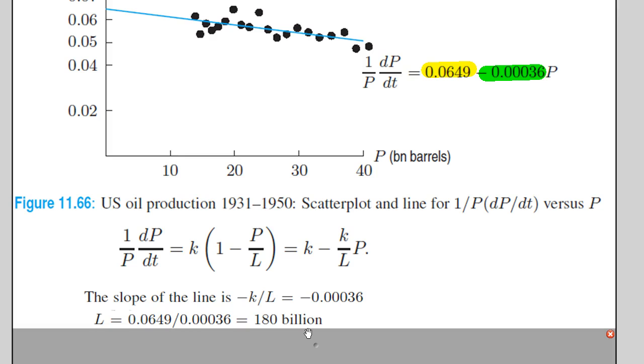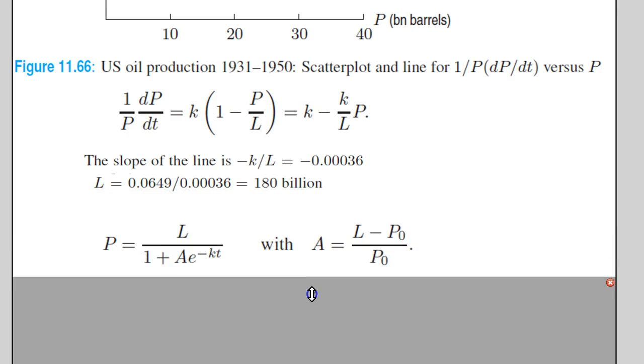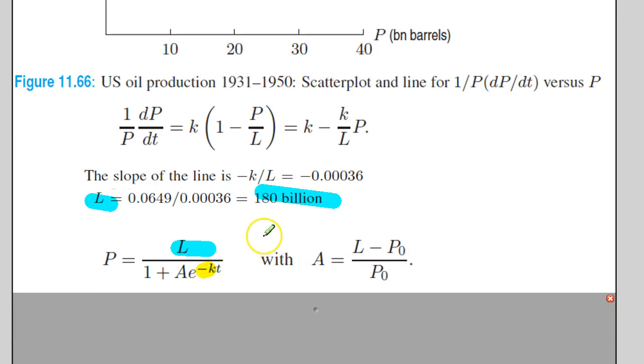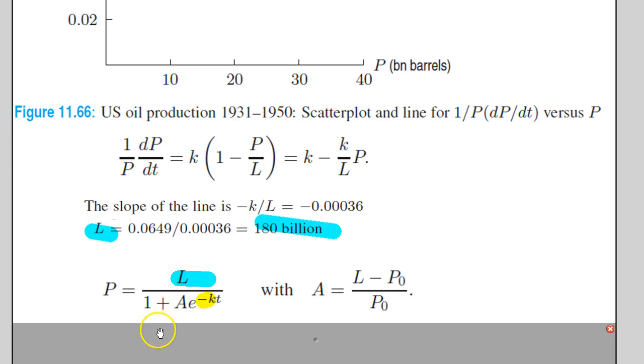Now the question is when will that limiting value be reached, when will the population of oil reach that value? That's when he used the logistic model to answer that question. If you recall, the logistic model should have already been memorized. It looks like L divided by 1 plus A e to the negative kt, where our L is 180 billion and our k is 0.0649. So negative k is negative 0.0649.